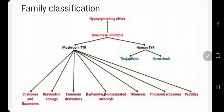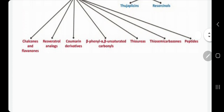Mind my English — it's not my first language and I might have an accent pronouncing these names. The families include: chalcones and flavanones, analogues of resveratrol, coumarin derivatives, beta-phenyl alpha-beta unsaturated carbonyls, thioureas, thiosemicarbazones, and peptides. I will go through each type and show examples.